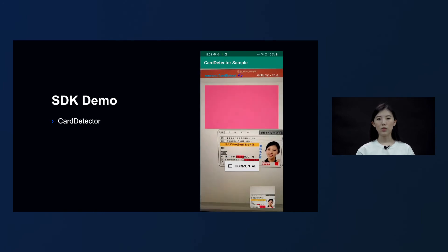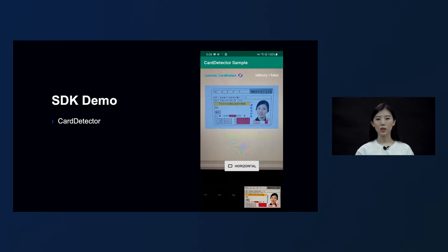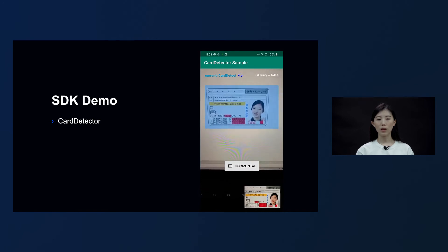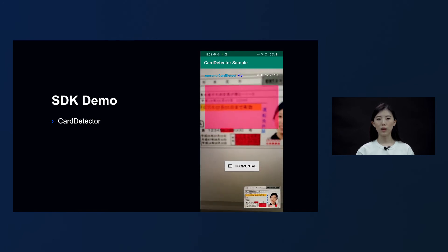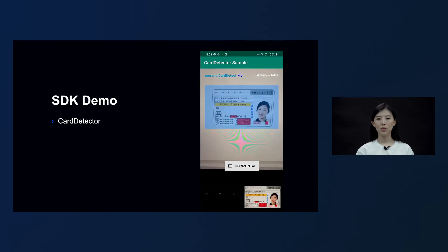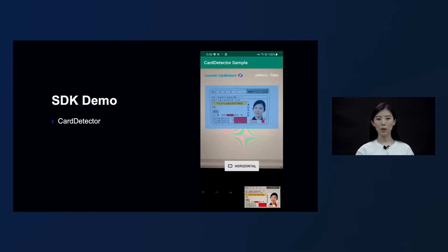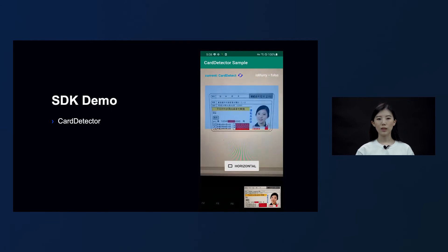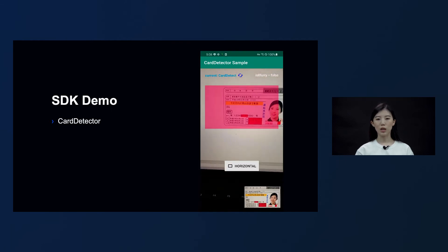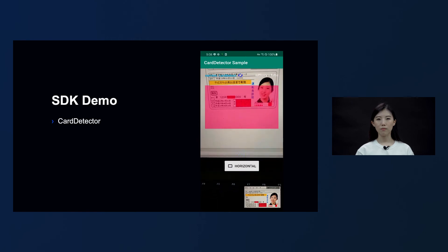Let me show you a sample of the app motion of the card detector SDK used for ID validation. The client side sends the screen image and frame of the target detection area to the card detector. When a card shows up in the target detection area, the SDK sends the detected card image to the client side along with whether detection passed or failed. In the video, the target recognition area frame turns blue when a card is successfully detected, or red when not detected, and on the bottom right corner you can see the image of the card sent from the card detector.